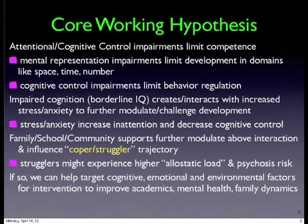There are things we won't be getting at here, like background genetics, but this framework will help us target cognitive, emotional, and environmental factors — help us figure out where the right interventions are, and improve things like academics, mental health, and family dynamics.